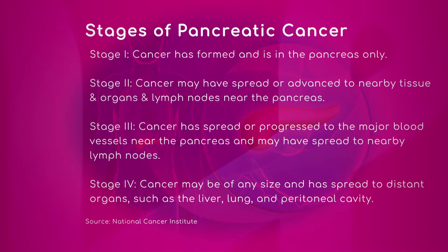Stage two is a bit of a mixed bag. These patients have tumors that are again confined to the pancreas, but some may have begun to grow outside of its confinements without involving structures that would deem it unresectable. A subset of these patients may also have positive lymph nodes. If someone says they had pancreatic cancer and had surgery, by default they're either stage one or stage two.